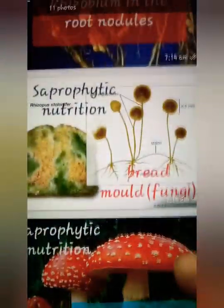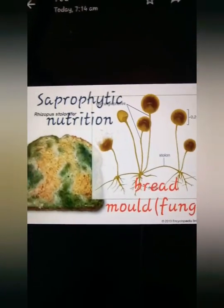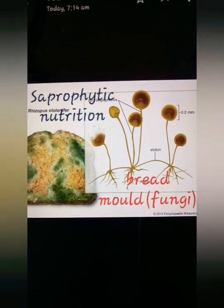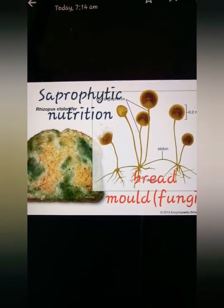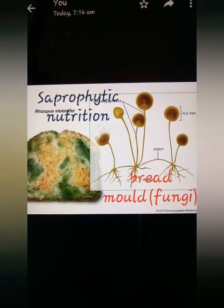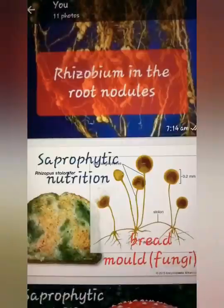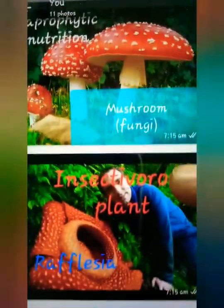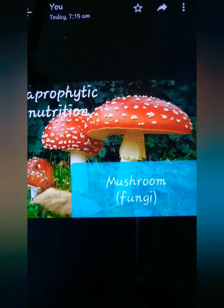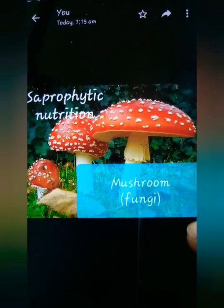Next, you have saprophytic nutrition. Under saprophytic nutrition, you have fungi which grows on bread — it's called bread mould, also known as rhizopus. Another example of saprophytic nutrition is mushroom. Mushroom is also a fungi; it's non-green and depends on dead organic matter.